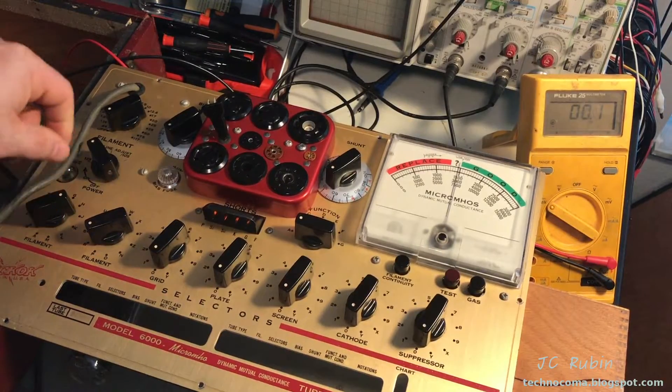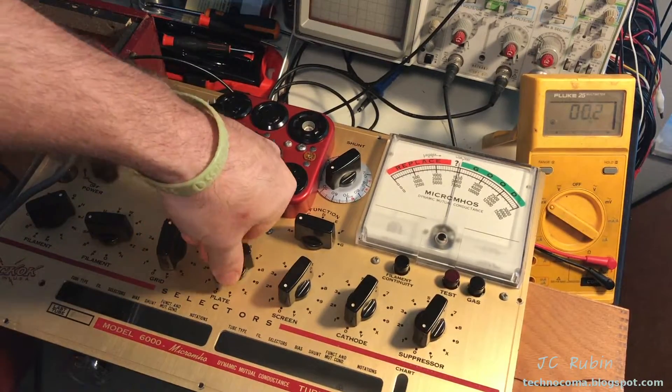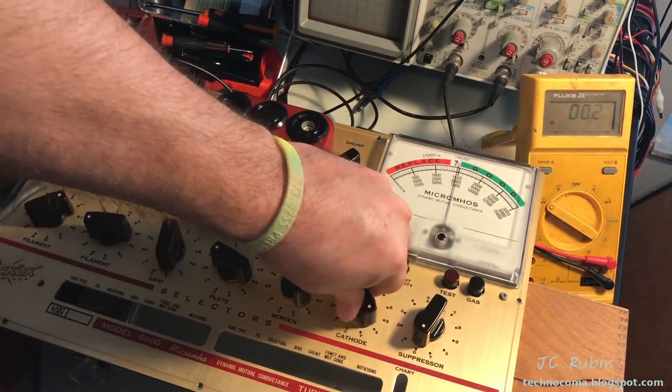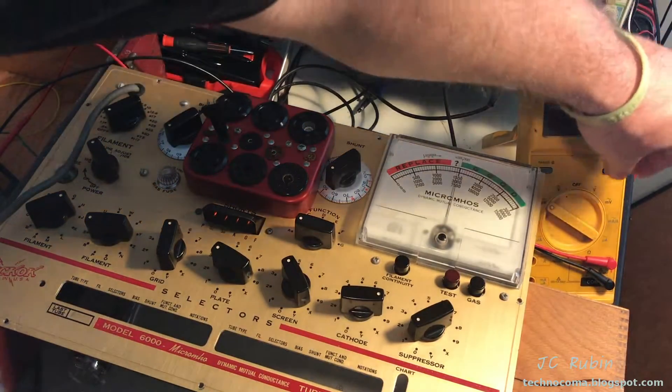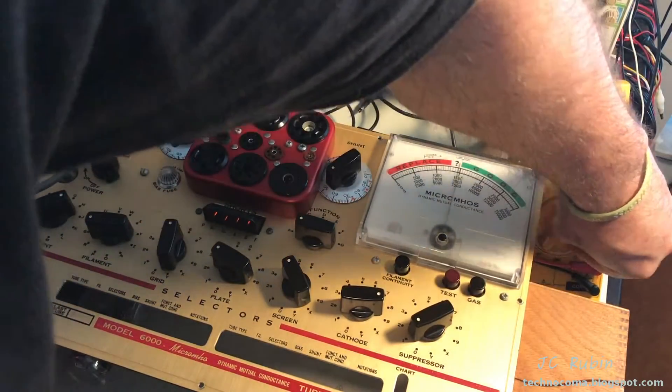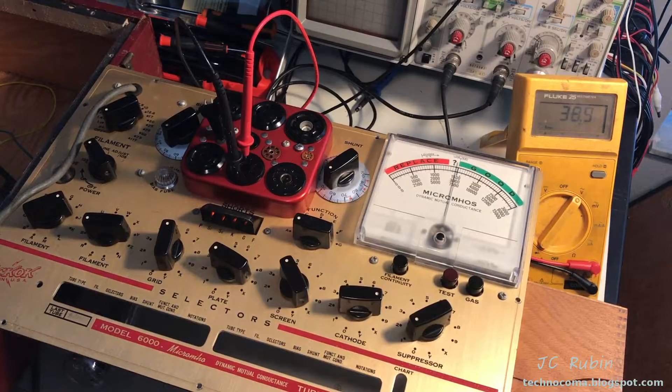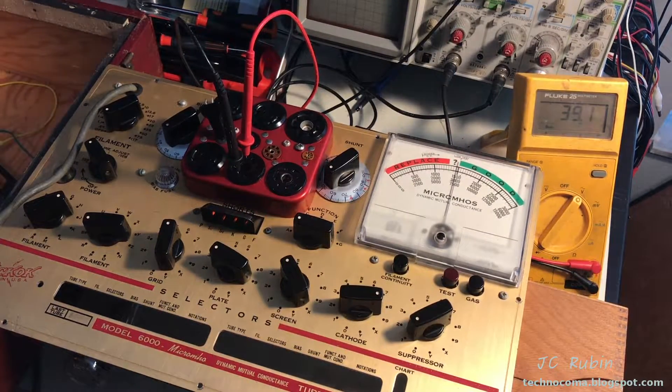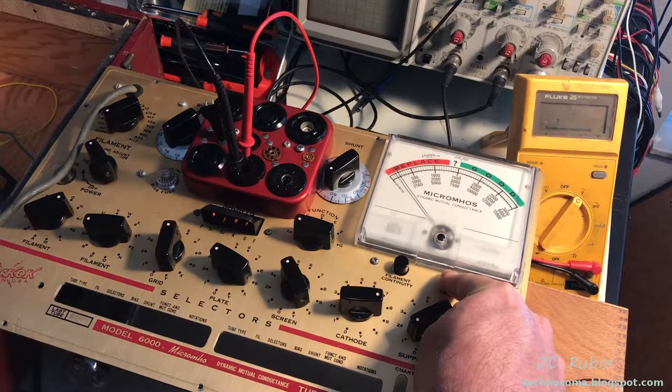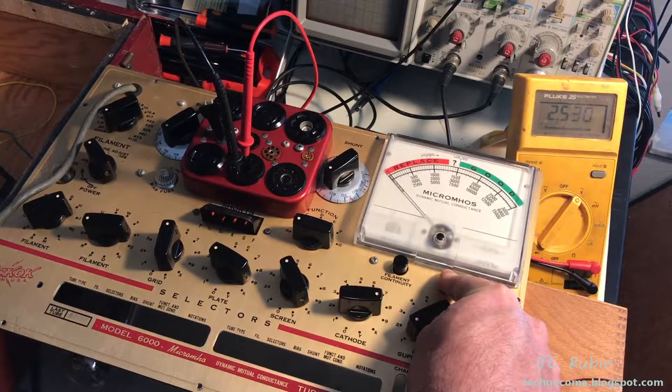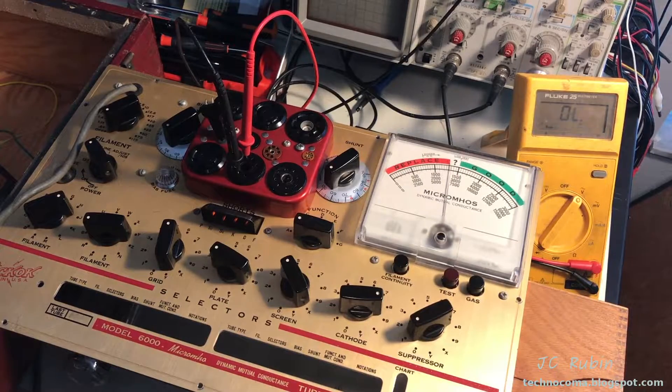We're going to set our multimeter to AC volts and we're going to connect this to pins five and eight. Ignore the parallax, I assure you that this is exactly on line test. I've got everything set up, pay attention to the Fluke and I'm going to hit test. We'll look at the AC voltage, and this one's not far off. The 2.53, that's not bad, but it's out of specification.